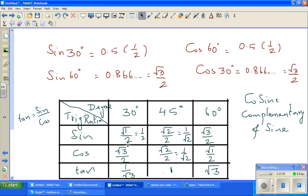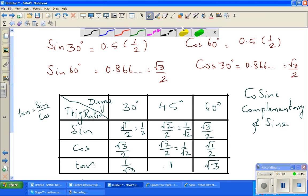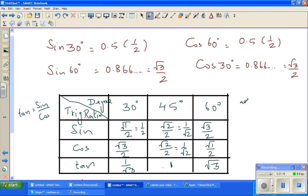Sin 30 is root 1 over 2. Sin 45 is root 2 over 2. So let me explain this, how I told you that root 2 over 2 becomes 1 over root 2.